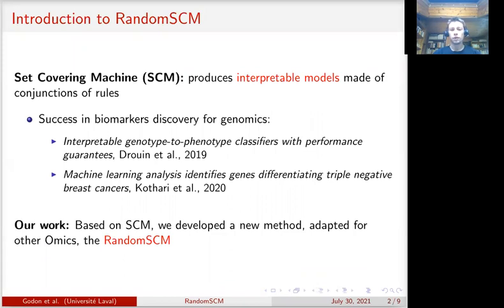The set covering machine is an algorithm that produces powerful and interpretable models based on a conjunction of rules defined from the features. It has been successfully applied in biomarkers discovery for genomics, as shown in several recent works.